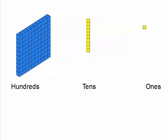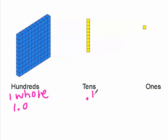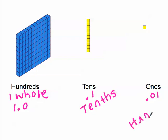When we're using base 10 blocks to represent decimals, we're going to use the hundreds block as our one whole — so the hundreds block equals 1.0. Each individual unit inside a hundreds block is going to make up one whole. Therefore, the tenths equals .1, and 10 of those make up one whole. Our ones are going to be .01, which is our hundredths place value. So the tens represent our tenths, and our ones represent our hundredths when working with decimals and base 10 blocks.